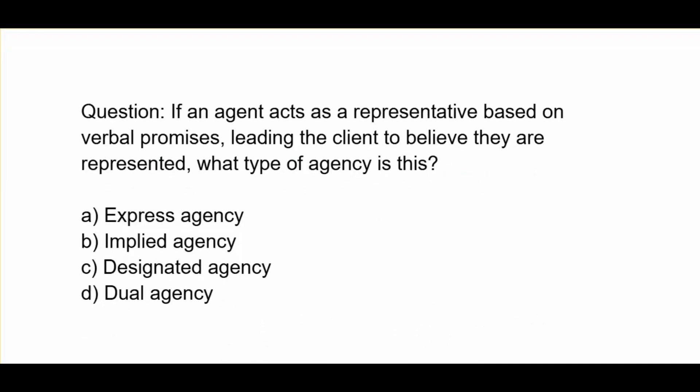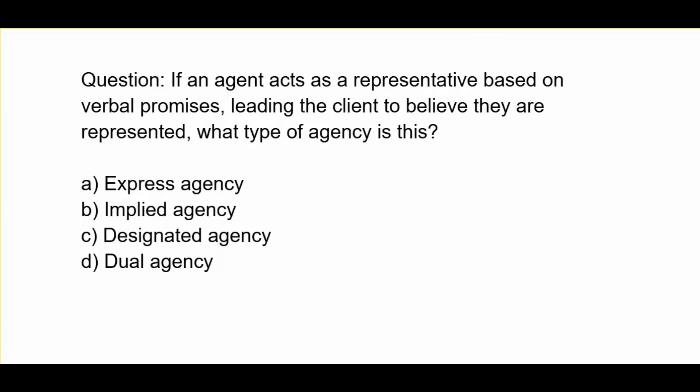If an agent acts as a representative based on verbal promises, leading the client to believe they are represented, what type of agency is this? A. Express agency. B. Implied agency. C. Designated agency. D. Dual agency.